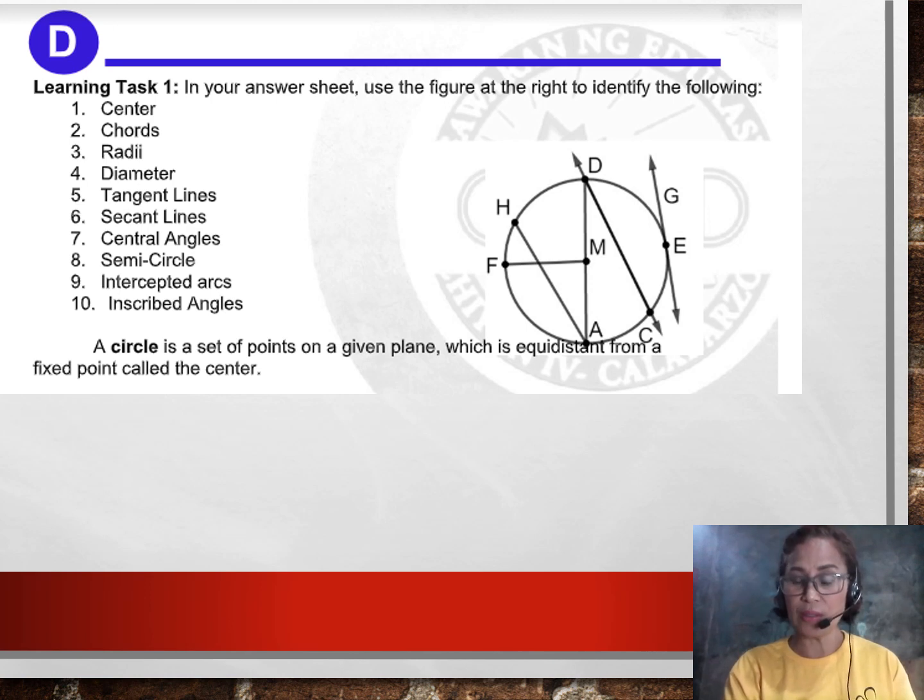We will now move on to answering Learning Task 1 of your module, which is found on page 13. In your answer sheet, use the figure at the right to identify the following. Number 1, you're asked to identify the center. Since in the figure, the center is this and the letter beside it is M. Therefore, the answer to number 1 is point M.